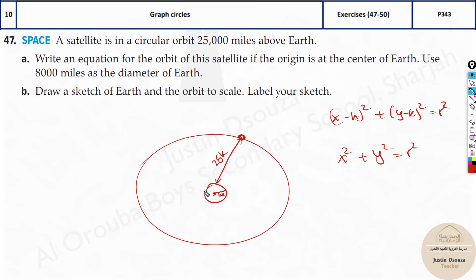But what is the radius now? From here to here, it is 4,000. And then we have 25,000. So 4,000 plus 25,000 would be 29,000 squared. We have to square this up. And then we have x² + y². Just put this in the calculator and you'll get the answer. The equation for part A.